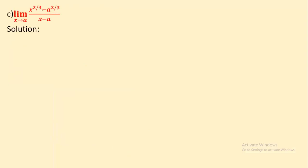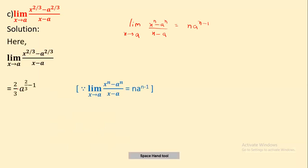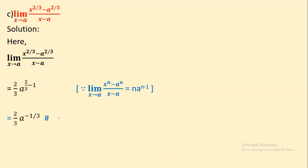Next: limit x tends to a of (x^(2/3) - a^(2/3)) / (x - a). This uses the standard formula: limit x tends to a of (xⁿ - aⁿ) / (x - a) = n · a^(n-1). Here n = 2/3, so the answer is (2/3) · a^(2/3 - 1) = (2/3) · a^(-1/3).